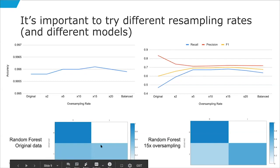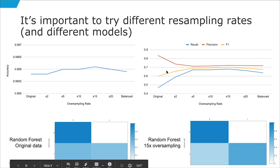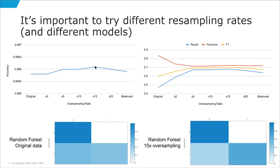Random forest on the original data is really under-predicting the ones. With 15x oversampling it looks much better, but while recall goes up and F1 improves, precision actually goes down — more things are erroneously being classified as ones. The model may still be better depending on your goal, but there's no free lunch. This is also a nice illustration of why confusion matrices can be misleading. As a sneak preview, Tamash will join next month to discuss ROC curves, goodness of fit, and confusion matrices.